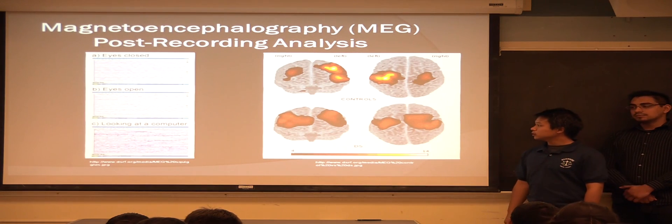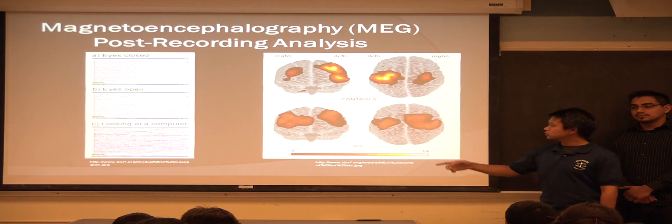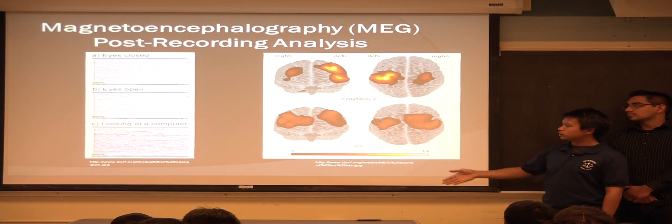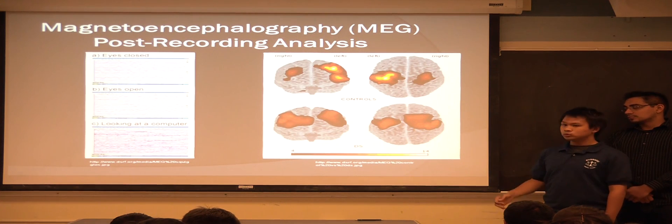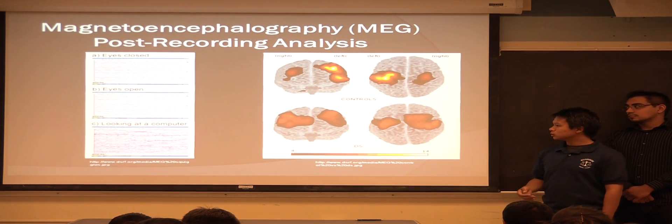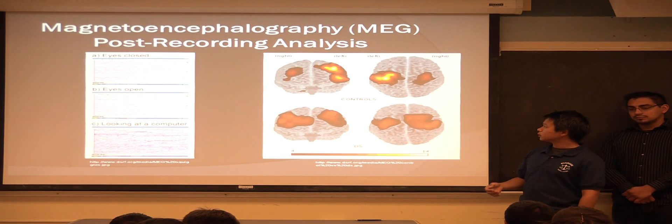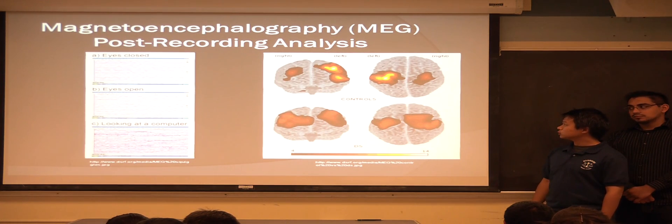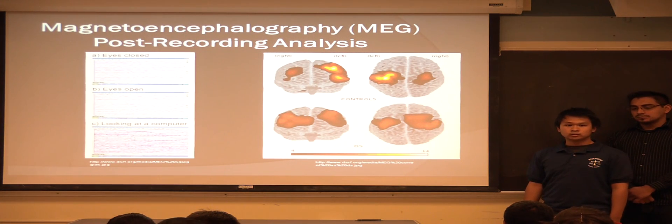So, post-recording analysis, on your right, it just shows what happens. It's just a measurement of when a person is doing a certain function, like eyes closed, eyes open, looking at the computer. And from there, they can use some neural techniques to find out where it is on the brain. And it shows where in real time and to what intensity these magnetic measurements are.